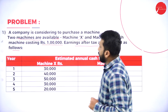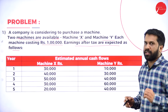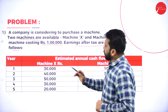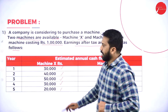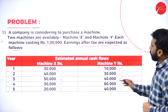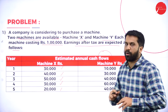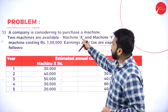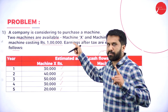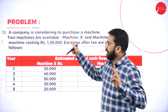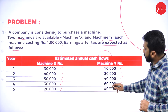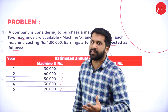We have a year column and estimated annual cash flow for Machine X and Machine Y. Machine X: 30,000, 40,000, 50,000, 30,000, and 20,000. Machine Y: 10,000, 30,000, 40,000, 60,000, and 40,000. These are cash inflows — not outflows. If you invest in Machine X, first year you will get 30,000; second year 40,000; then 50,000, 30,000, and 20,000. These are your returns from that machine.